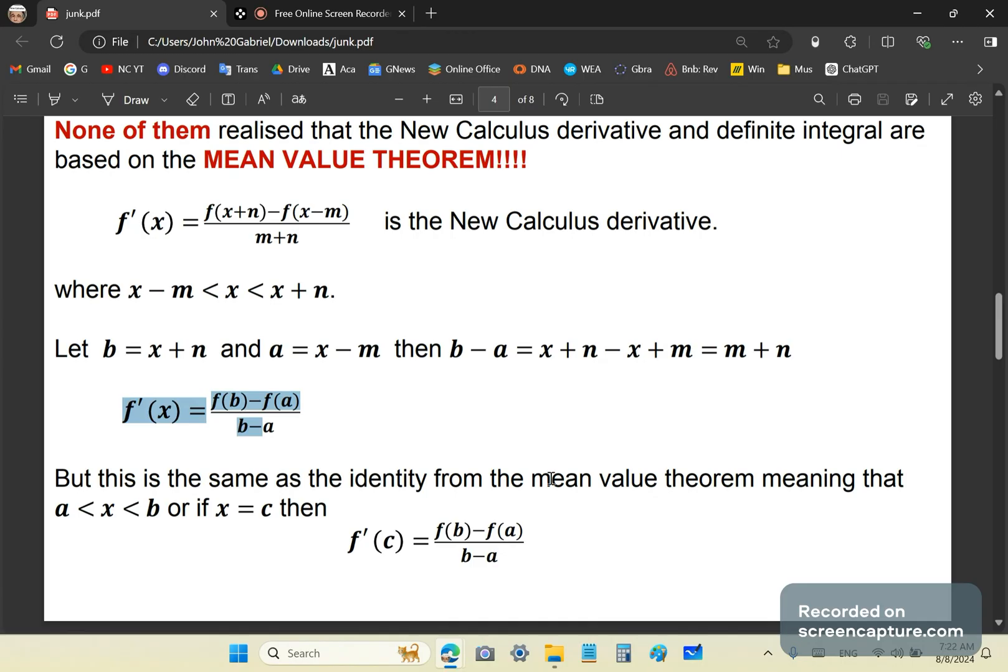This is the same identity from the mean value theorem stating that the derivative at c is equal to this finite difference. There's nothing about limits there or bullshit about infinity or epsilon delta garbage or anything like that.